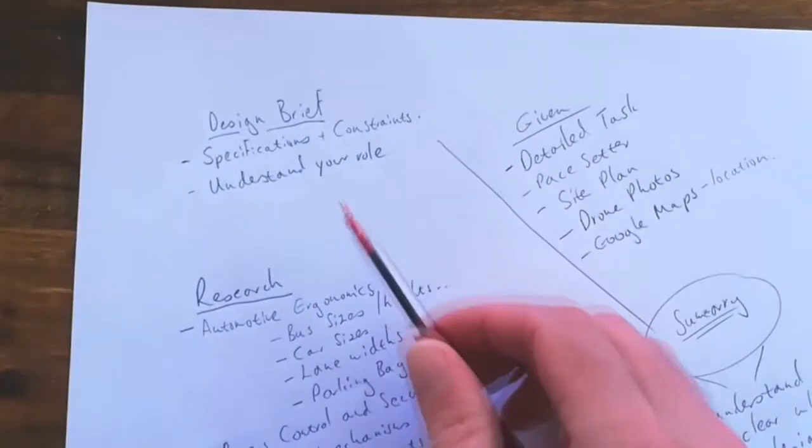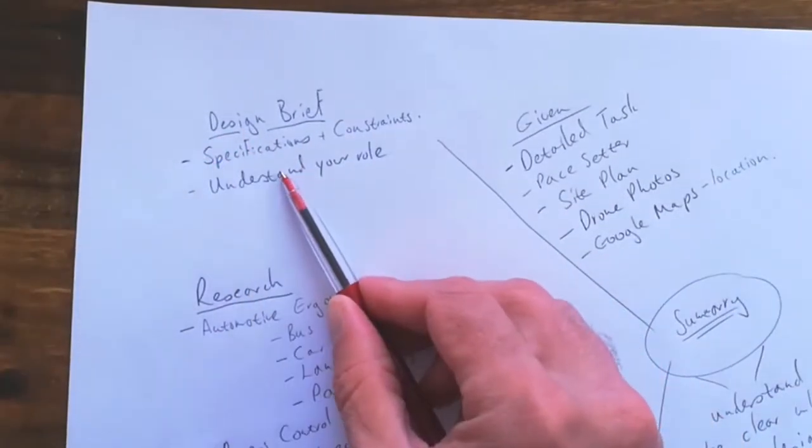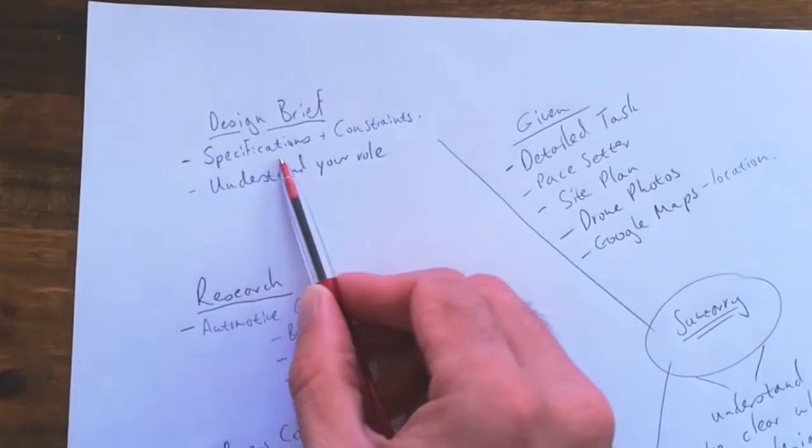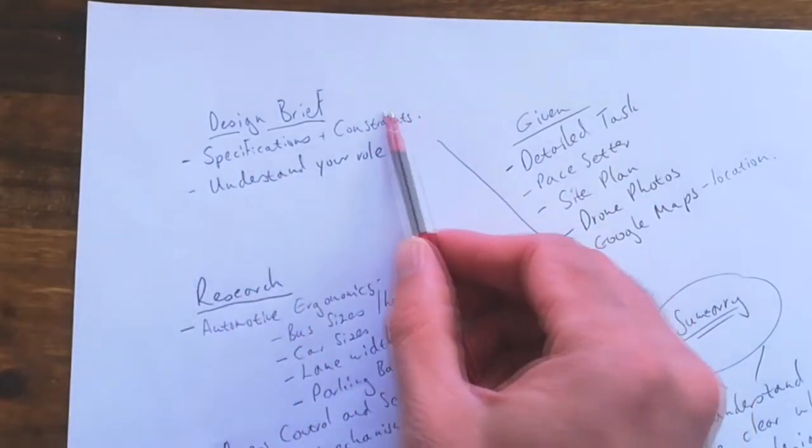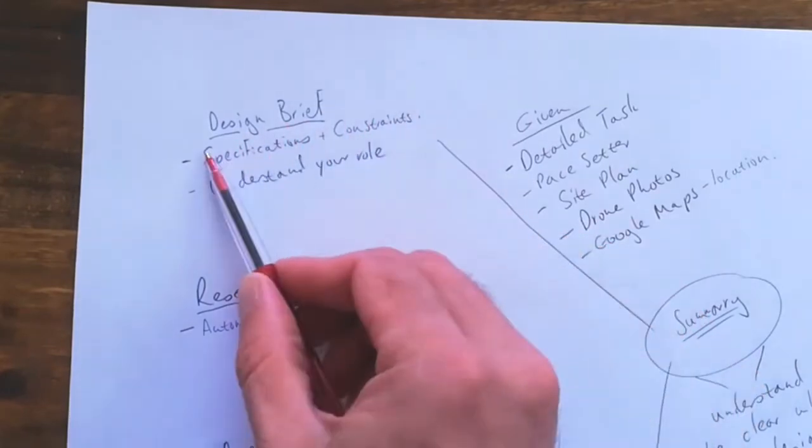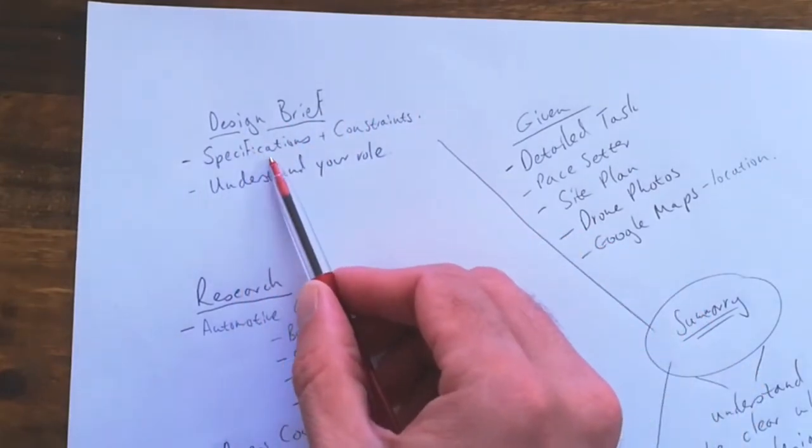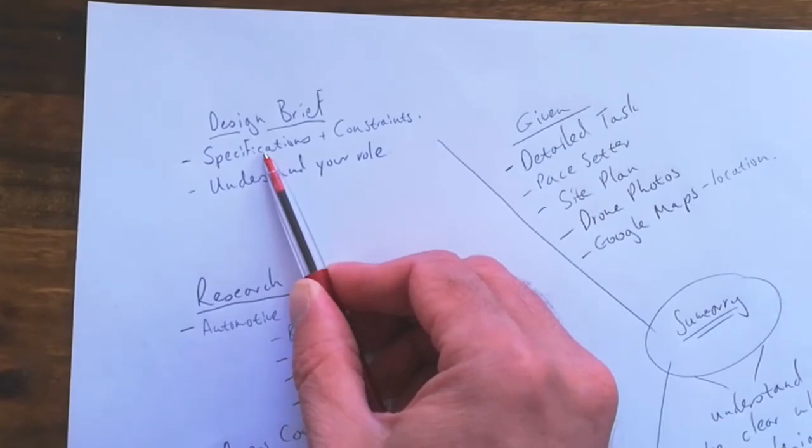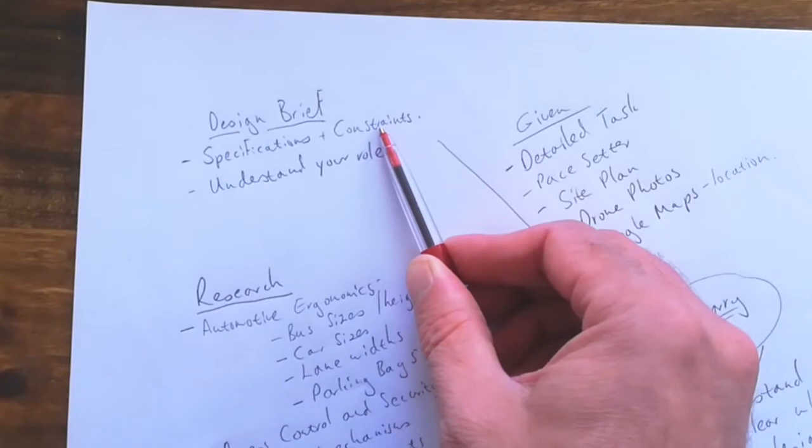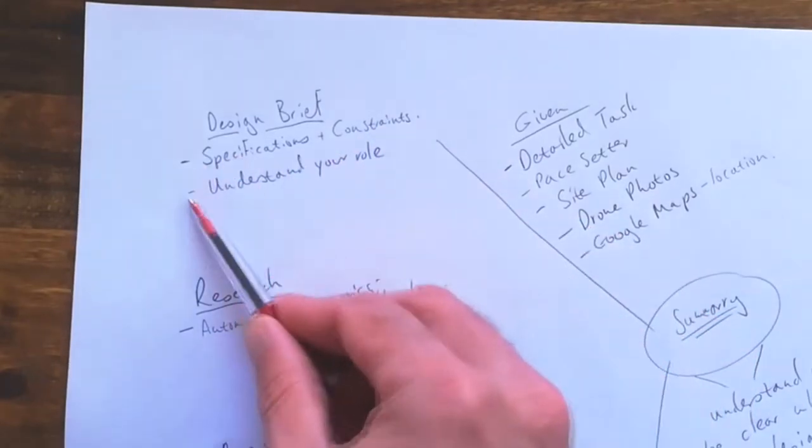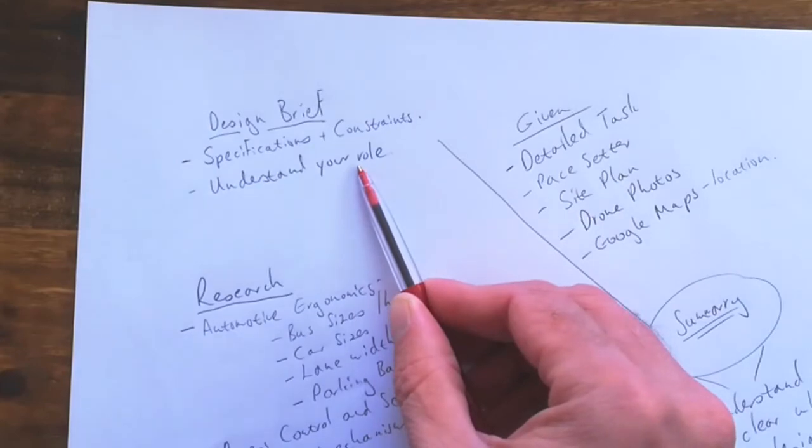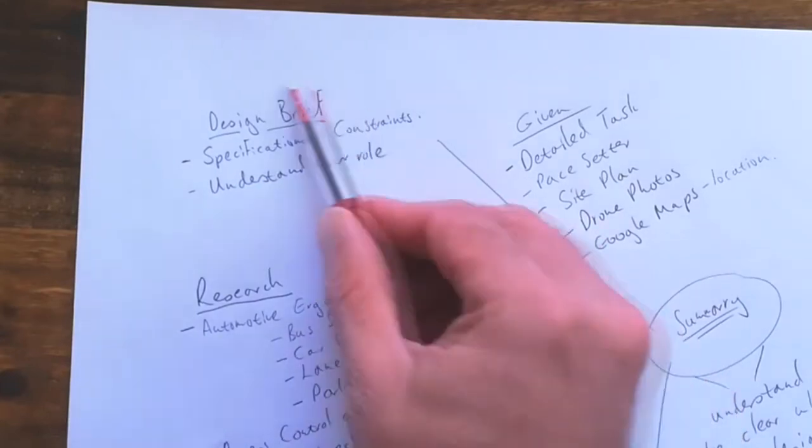With the design brief, you've now spent time coming up with a comprehensive list of specifications and constraints. This is critical for you to have read through the task and clearly listed all the things required for your design and also the things constraining you. You need to understand your role in this process and word that in a paragraph or two.